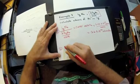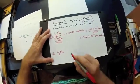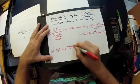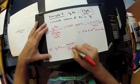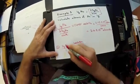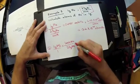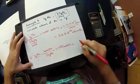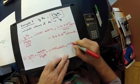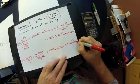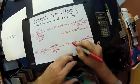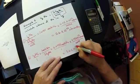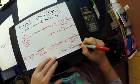Method two uses the unit multiplier format: start with 1 gram of sodium, multiply by 1 mole of Na over 23 grams of Na — mass units cancel, giving 0.0435 moles of Na. Then multiply by Avogadro's number — 6 times 10 to the 23rd atoms per mole — moles cancel, and we get the same result: 2.6 times 10 to the 22nd atoms of sodium.